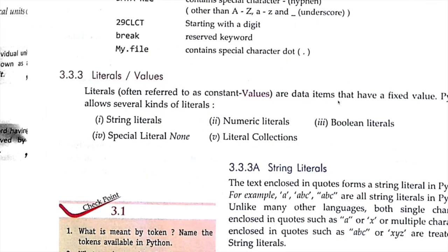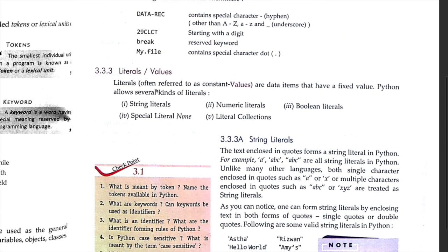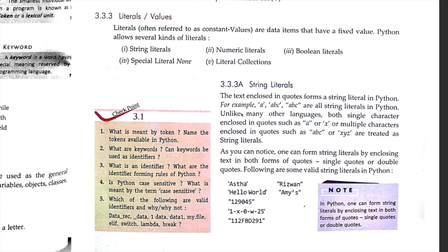Now we will talk about literals. Literals are often referred to as constant values — a data item that has a fixed value. Python allows several kinds of literals: string literals, numerical literals, boolean literals, and special literals. String literals mean whatever is written inside quotation marks, either single or double. For example, 'astha' in single quotes or double quotes — text enclosed in quotes forms a string literal in Python.